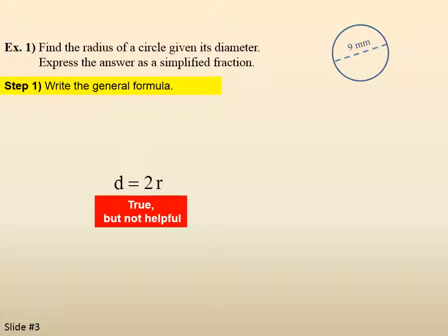True, but not helpful, because we're trying to find the radius. So we want to rewrite it so it says radius is the diameter divided by 2. That's better.